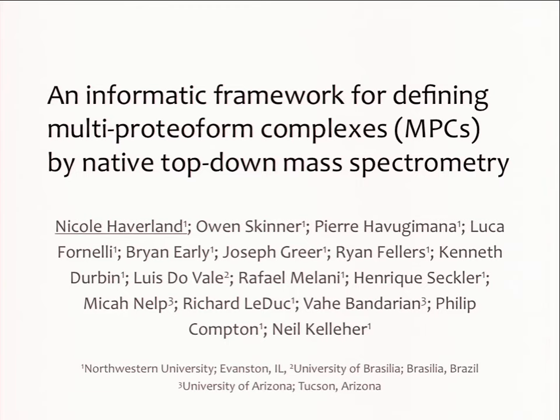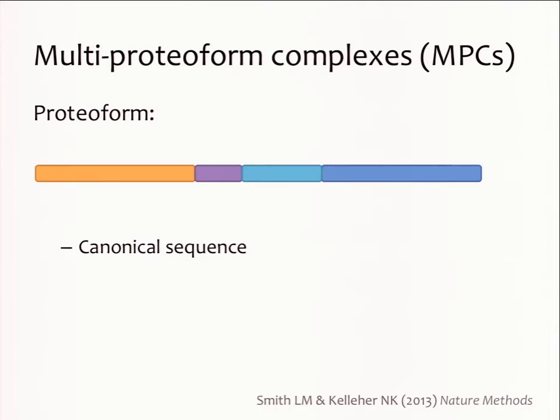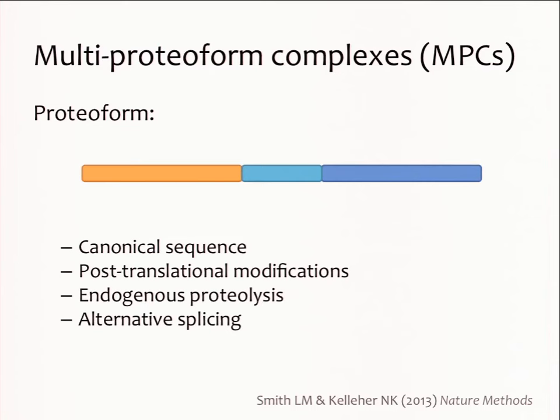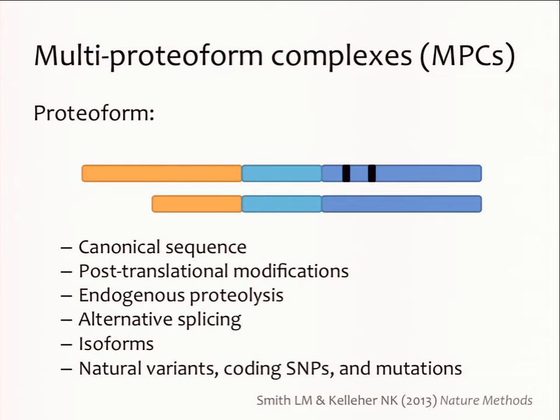Before we go into too much detail, we first need to understand exactly what a multiproteiform complex is. A proteiform is a term that was developed to describe protein complexity. It can include the canonical sequence, post-translational modifications, endogenous proteolysis, alternative splicing, isoforms, natural variants, coding SNPs, mutations, and combinations of these features.